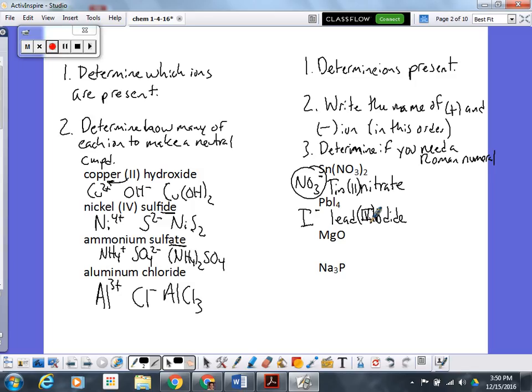So that one needs a Roman numeral. The next one, MgO, Mg, magnesium, O, oxide. O is oxygen as a negative ion that's oxide. I look, magnesium is in group two. It does not need a Roman numeral. I am done.